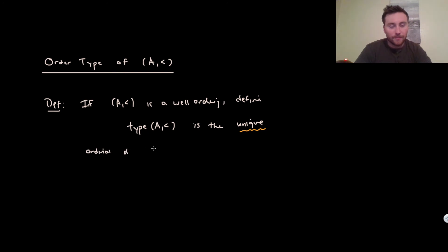maybe alpha, such that (A,<) is order-isomorphic to (alpha, ∈).